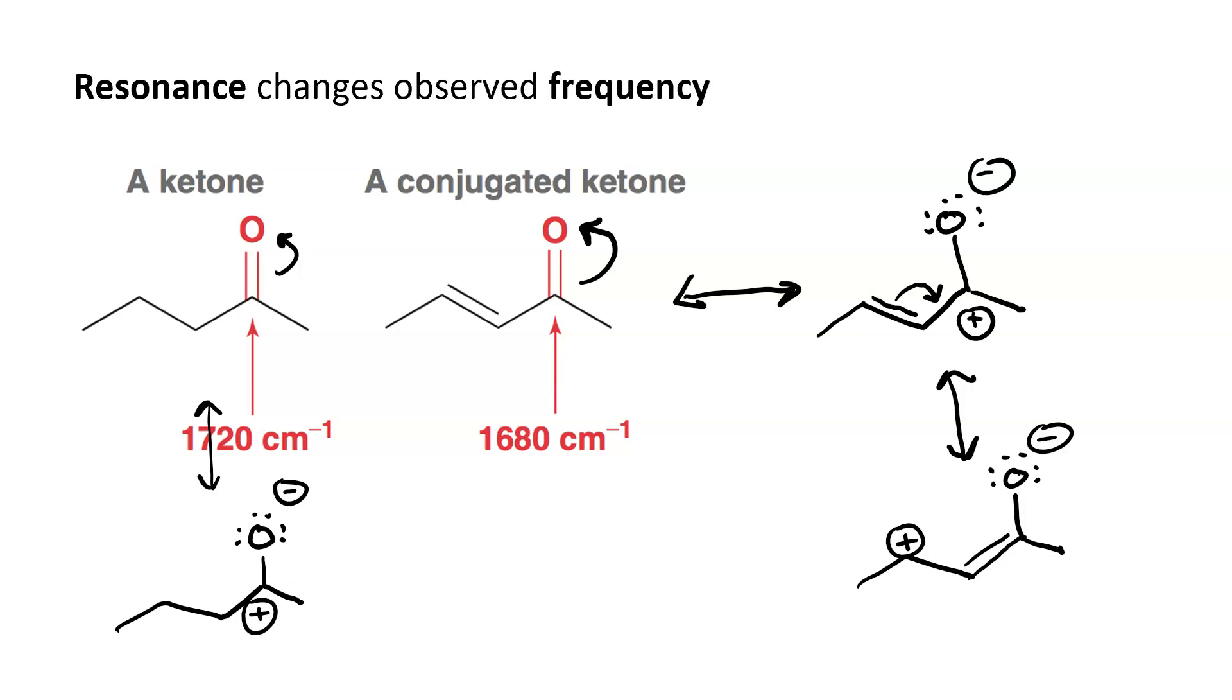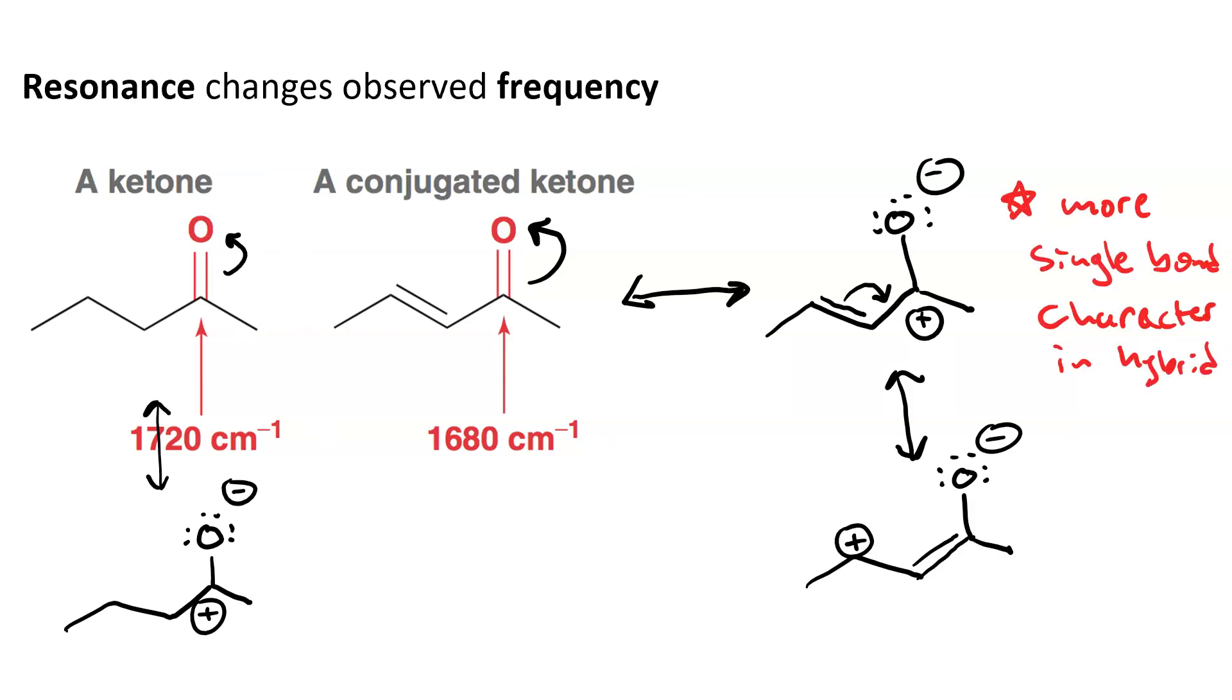What does that do? Having two resonance structures with a C-O single bond puts more single bond character in the resonance hybrid, and the consequence of having more single bond character is a lower force constant, and hence a lower wavenumber.